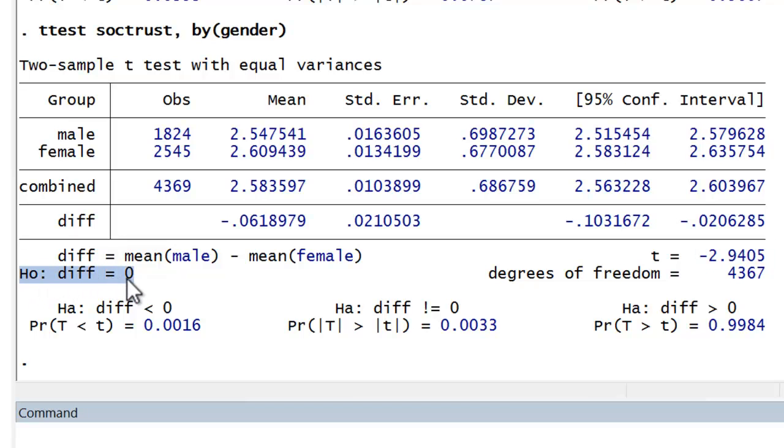Now note that our null hypothesis is that the difference in means is zero. And we can specify one of three alternative hypotheses, two of which can be directional. So for example, let's say we had hypothesized that females would have a higher mean level of social trust. In that case, as we see here, that results in a negative difference. Again, given the ordering, the mean of male minus the mean of female.